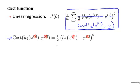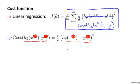The interpretation of this cost function is that this is the cost the learning algorithm has to pay if it outputs prediction h of x and the actual label was y. So the cost for linear regression is 1 half times the squared difference between what it predicted and the actual value observed for y. This cost function worked fine for linear regression, but here we're interested in logistic regression.